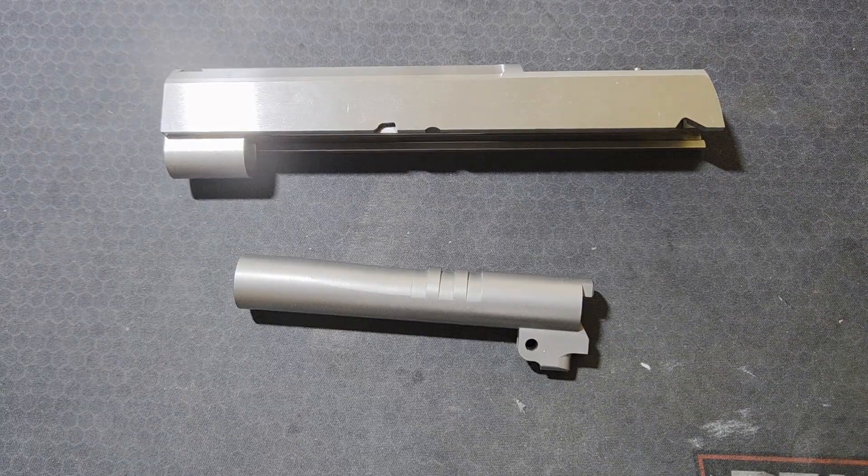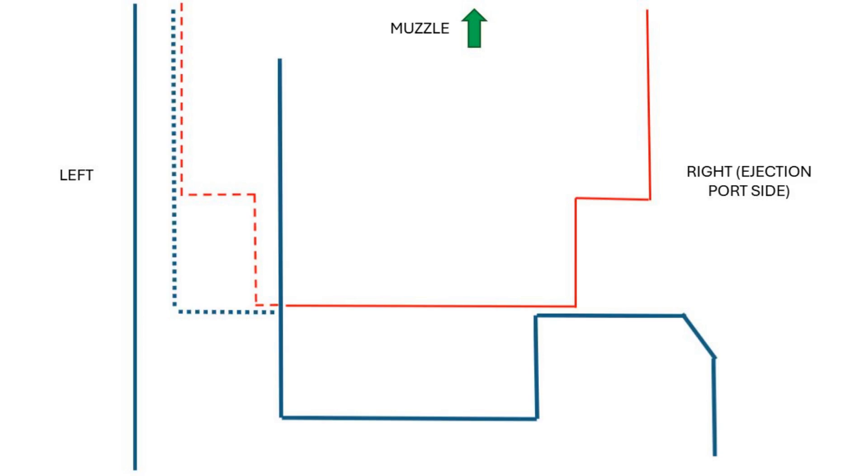We need to start with some measurements. We will be seeing this diagram throughout the rest of this section. The barrel is red, the slide is dark blue, and we're looking top down with the muzzle towards the top of your screen and the ejection port to the right.